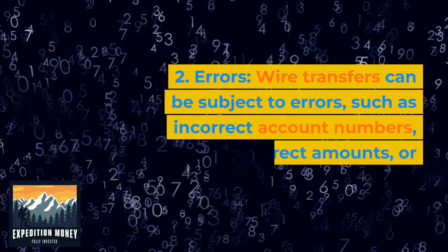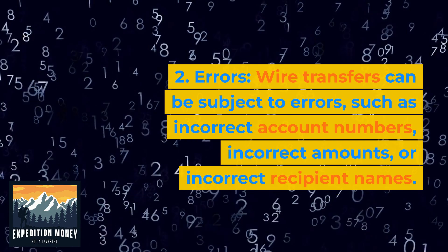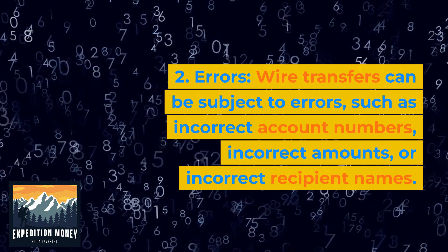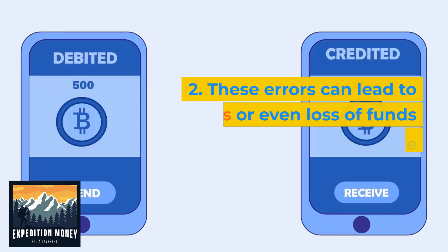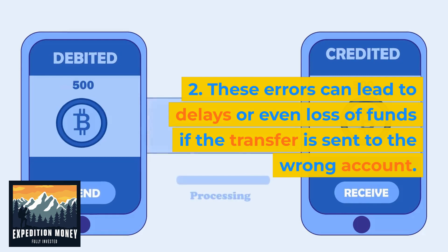Errors: Wire transfers can be subject to errors, such as incorrect account numbers, incorrect amounts, or incorrect recipient names. These errors can lead to delays or even loss of funds if the transfer is sent to the wrong account.